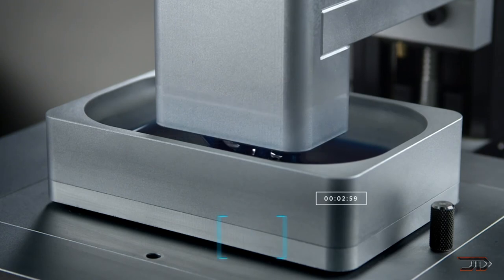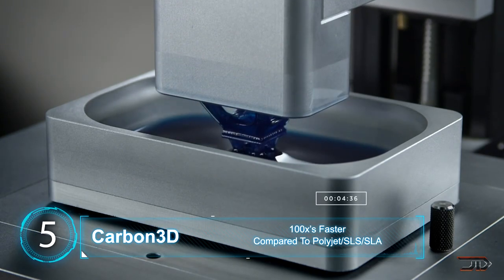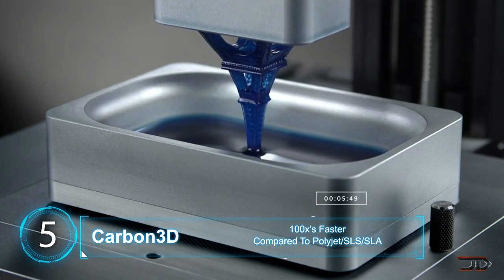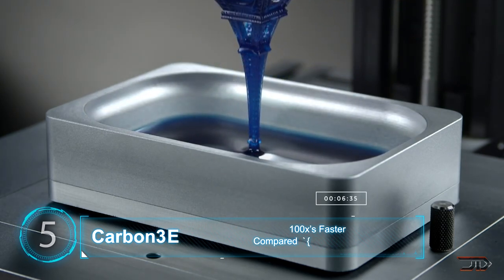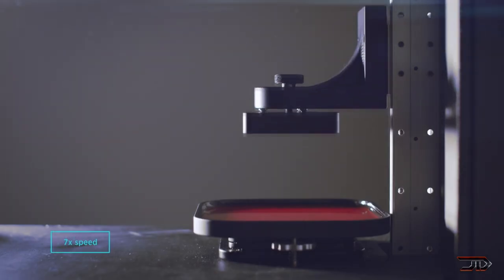At number 5, the Carbon 3D printer. Being the fastest and most unique device on the list, it works by using light and oxygen to cure a photosensitive resin. Printing can be reduced from hours to minutes and printed objects are more consistent and smoother when compared to conventional printers.